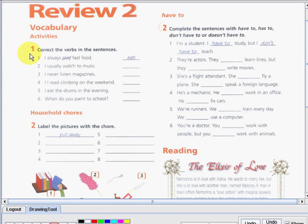Okay, so number one, correct the verbs in sentences. So, for example, I always play fast food. So, you can play in fast food, right? What did you usually do? Very good. So, that is eat. Okay, what about number two? I usually watch to music. So, what's the answer? Very good. So, I usually listen to music. What about number three? I never listen magazine. So, what's the answer? Very good. So, I never read magazines.